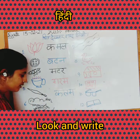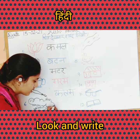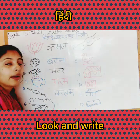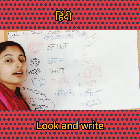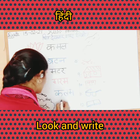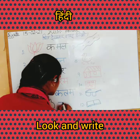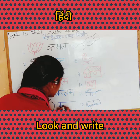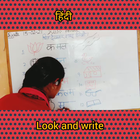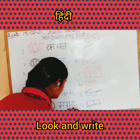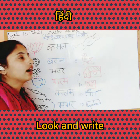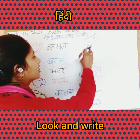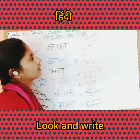Now see the next picture — dekhi, kis-ki picture hai? Ma-ga-r. Now you have to write on the sixth number: Ma-ga-r.